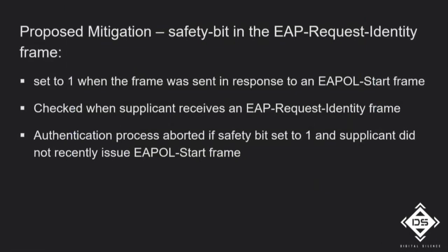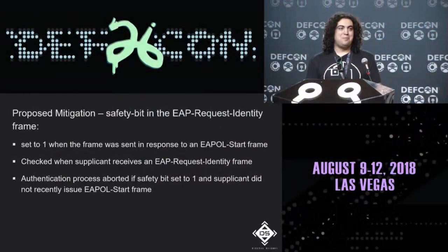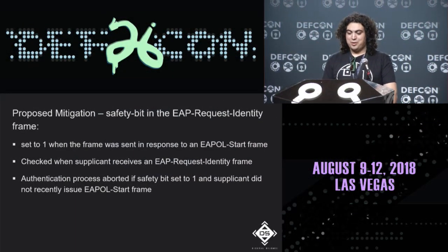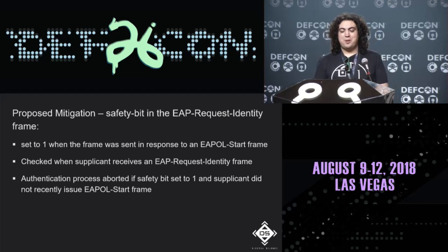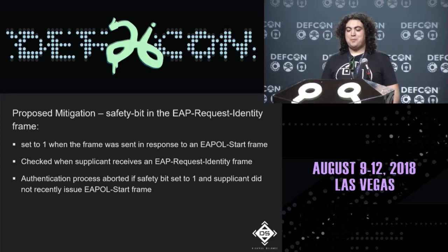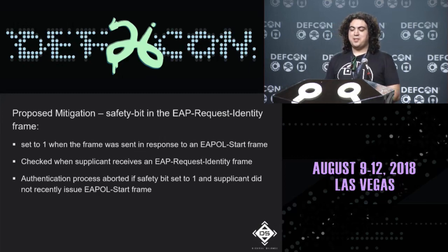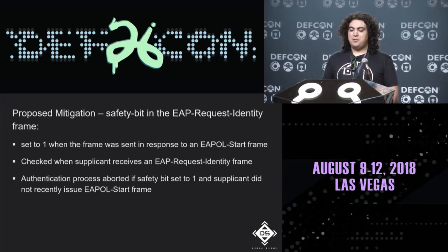A proposed mitigation for the force re-authentication attack: add a safety bit to the EAP-MD5 request identity frame, set to 1 if sent in response to an EAPOL start frame. The supplicant checks this bit on receipt — if it's set to 1 and the supplicant did not recently issue an EAPOL start frame, abort the authentication process.